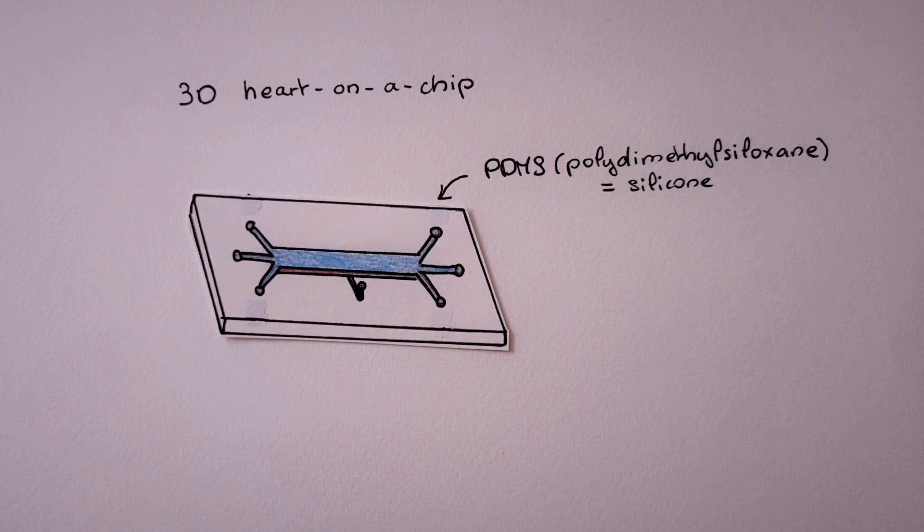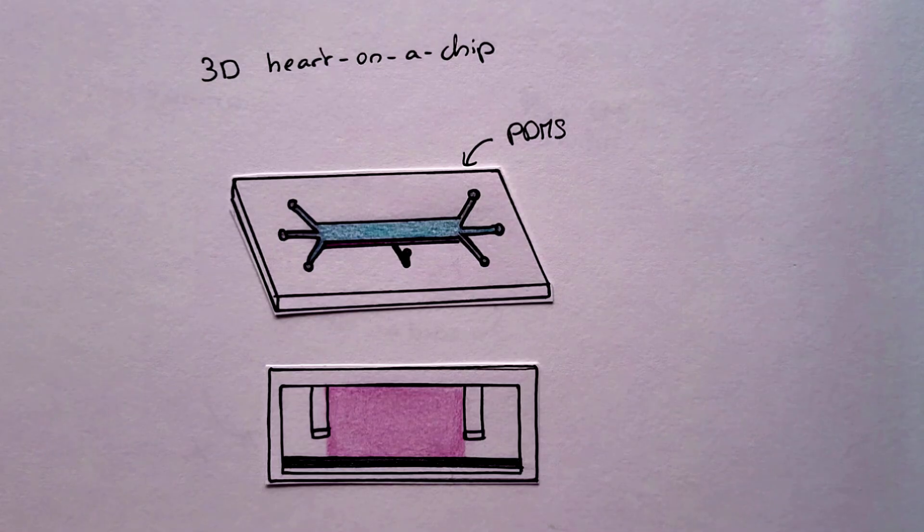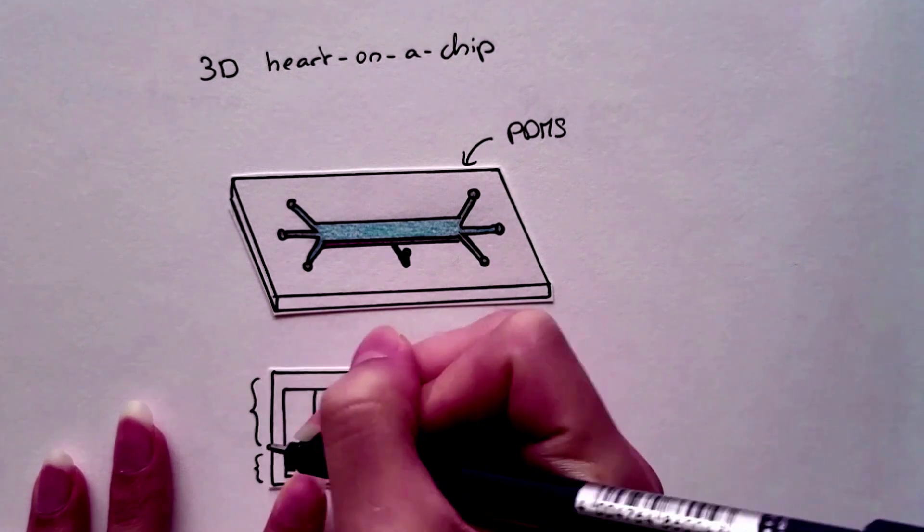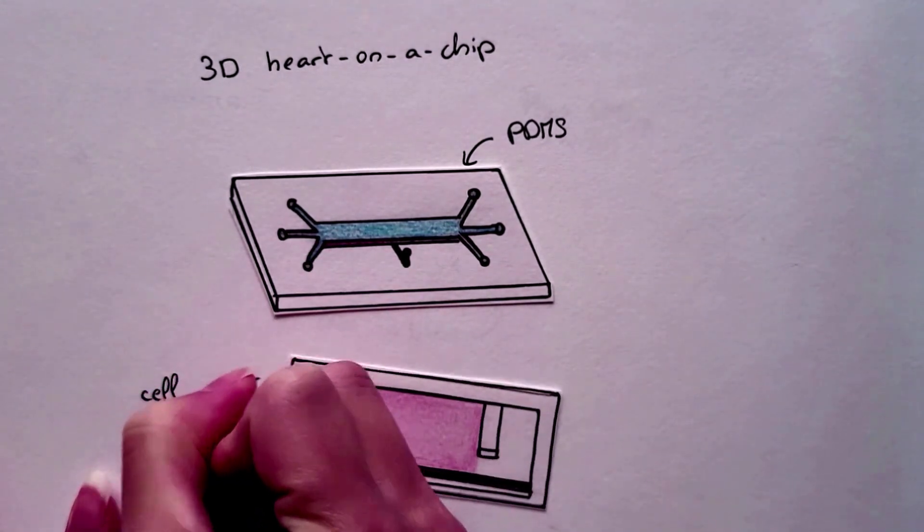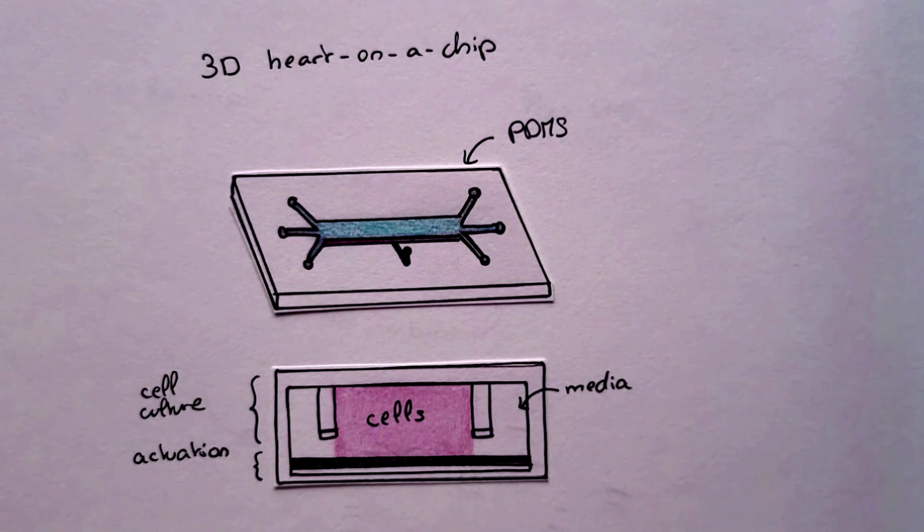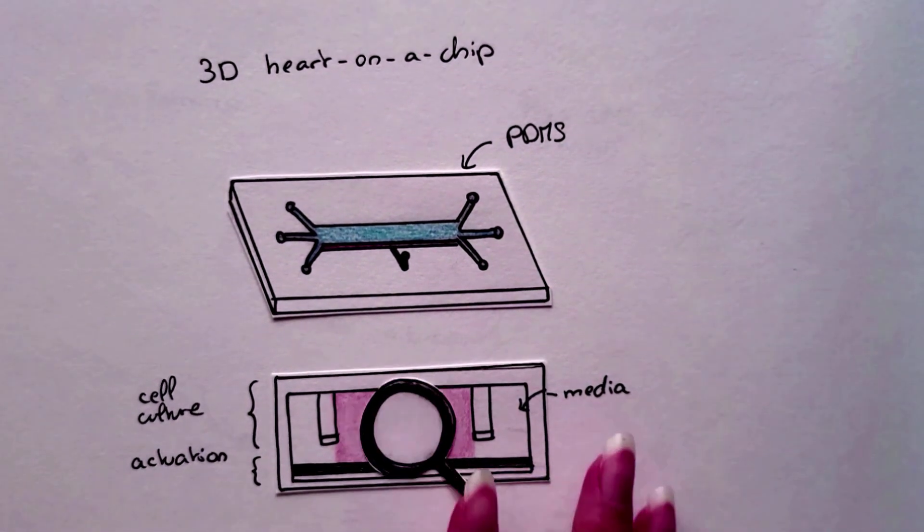To create it, we need a microfluidic chip with PDMS. The chip is made of two compartments: a cell culture chamber and an actuation chamber to apply pressure to the cells. The two chambers are separated by a thin membrane.